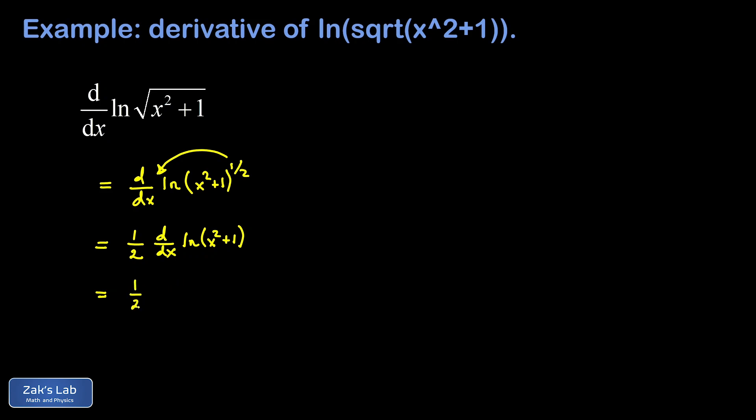So we differentiate the natural log with respect to its argument, treating x squared plus one as a single variable just for the moment. And the derivative of a natural log is one over its argument. So I have one over x squared plus one.